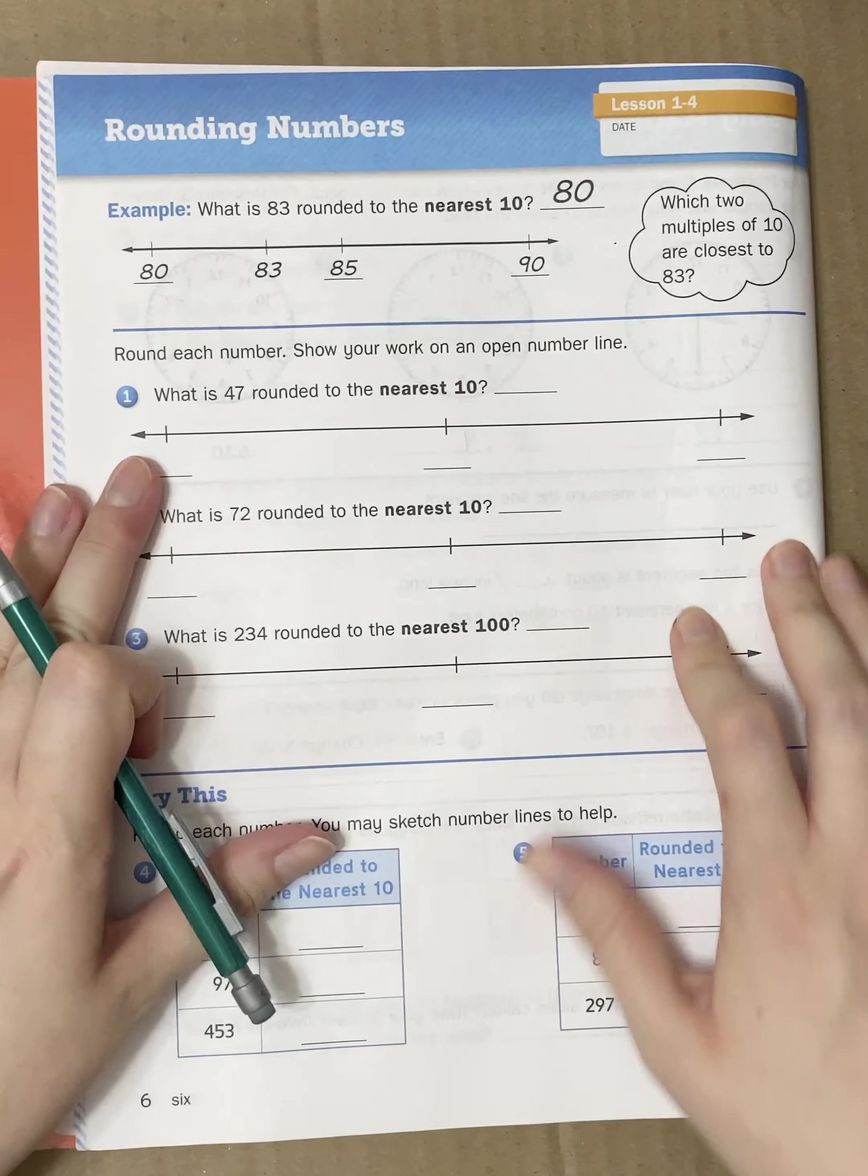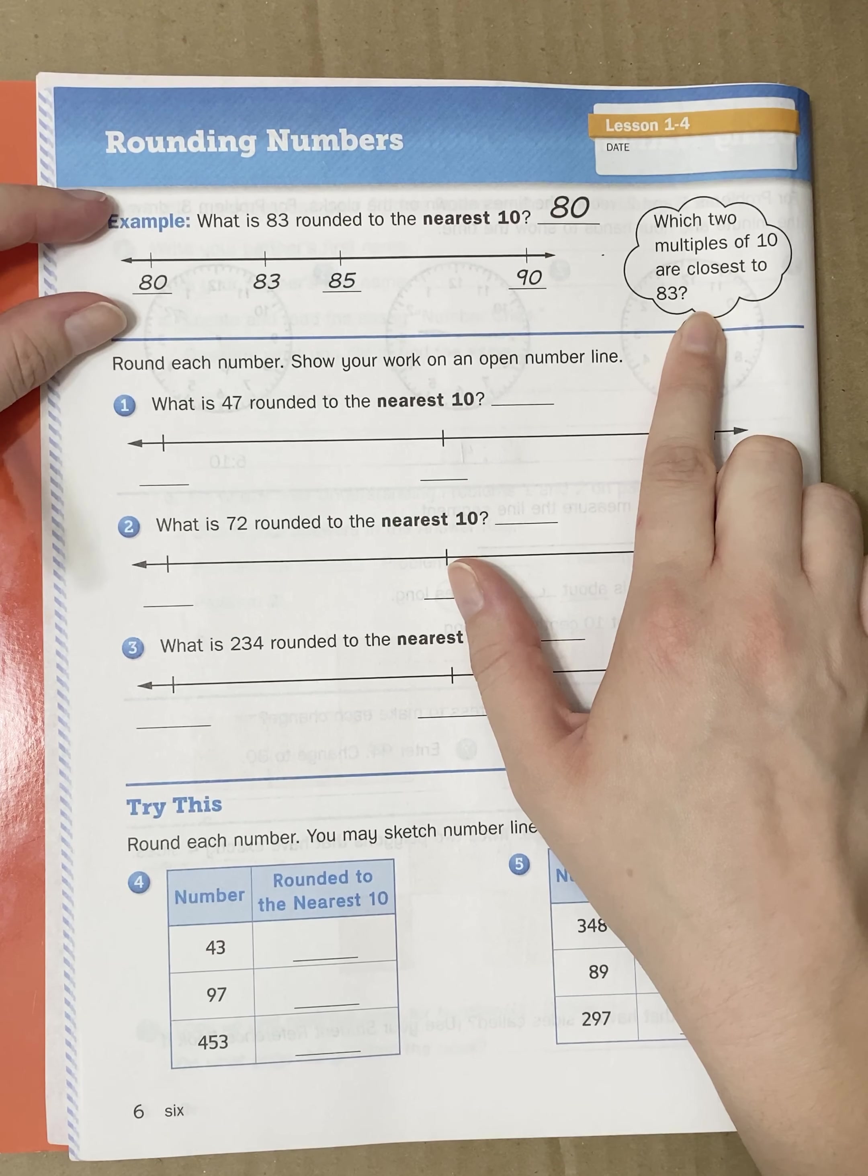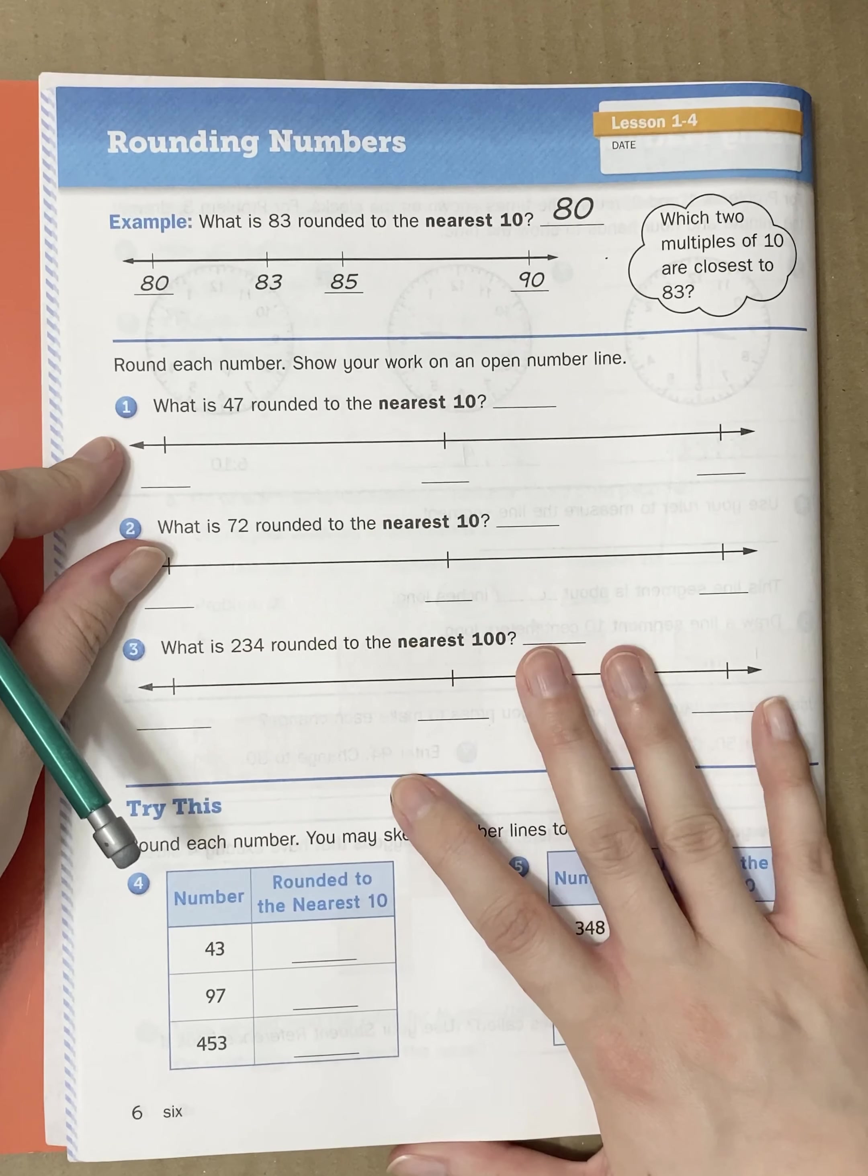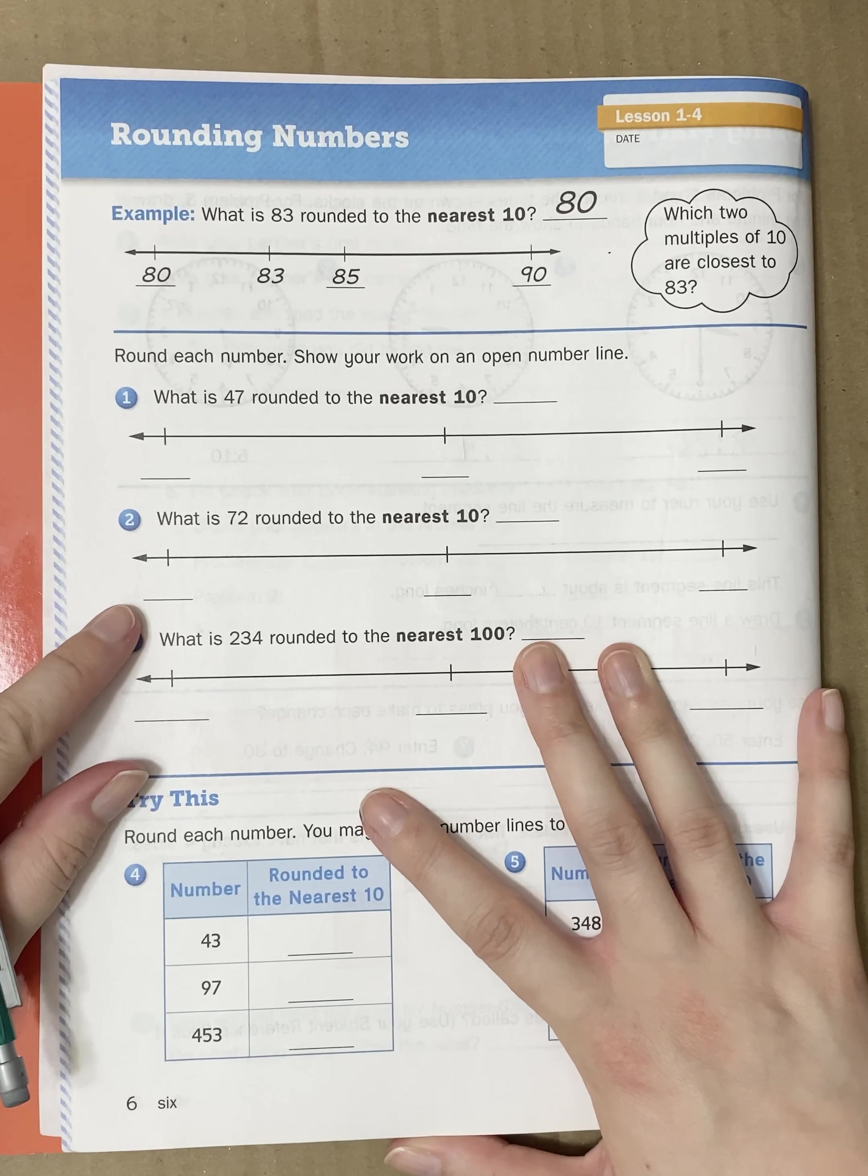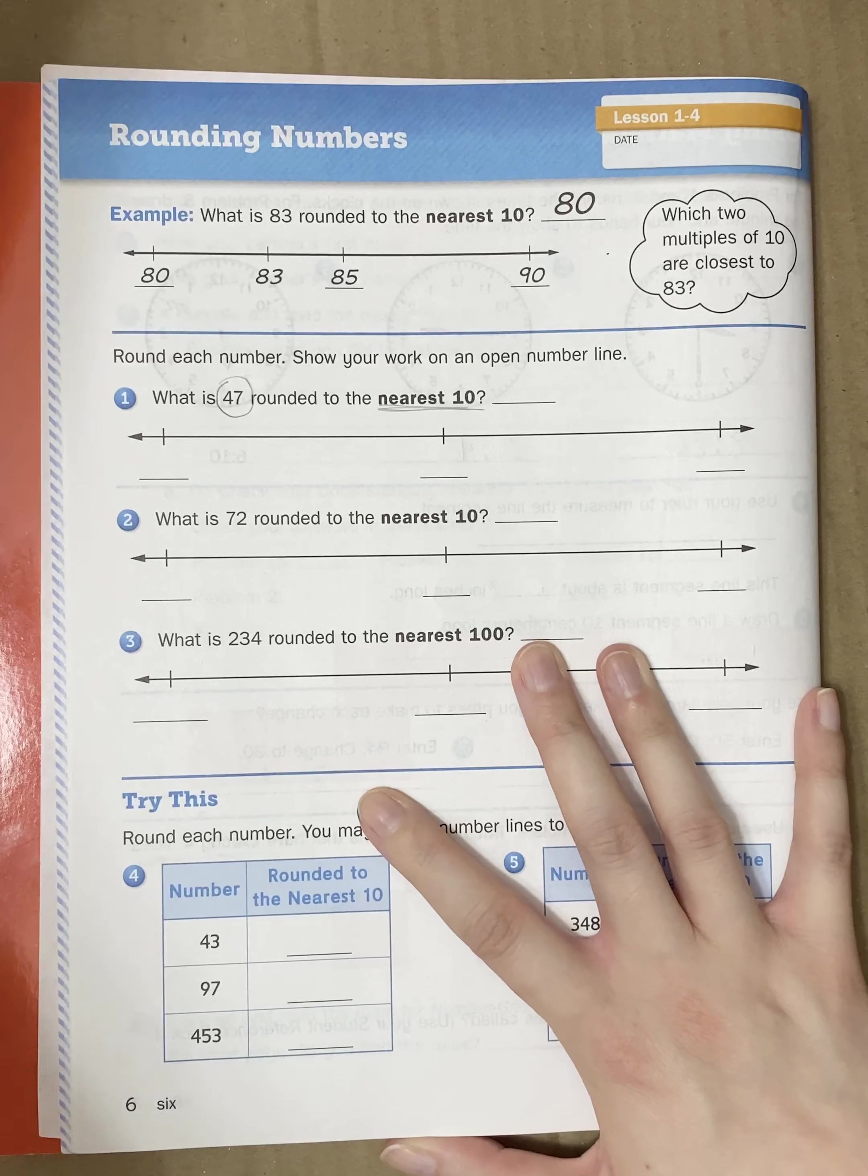Let's look at what we're going to be doing in our math journal today on page 6. So again, they've given you an example of what we're going to be doing today. They've already drawn your number lines. So let's look at number 1. Round each number. Show your work on an open number line. What is 47 rounded to the nearest 10?